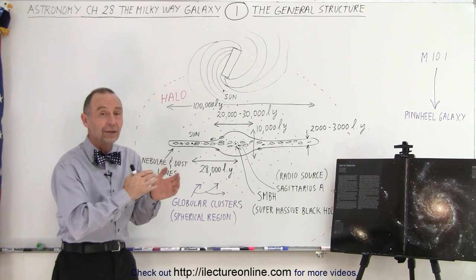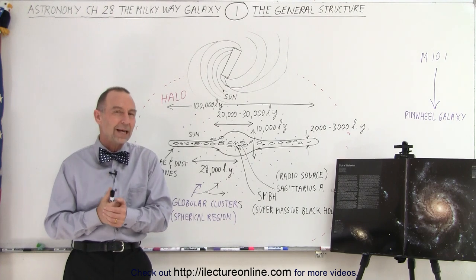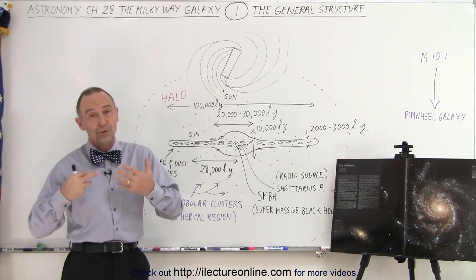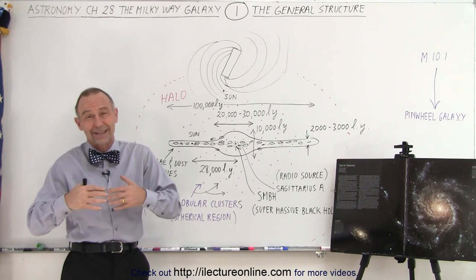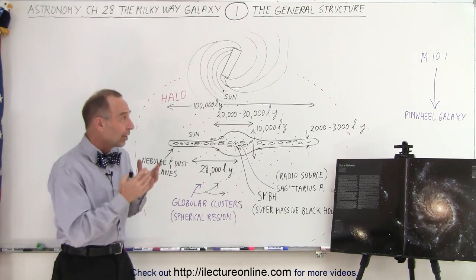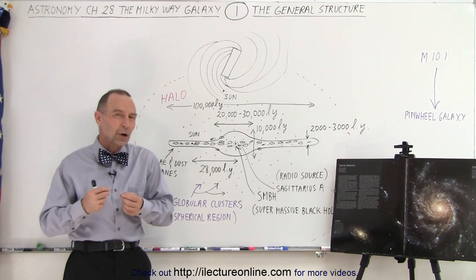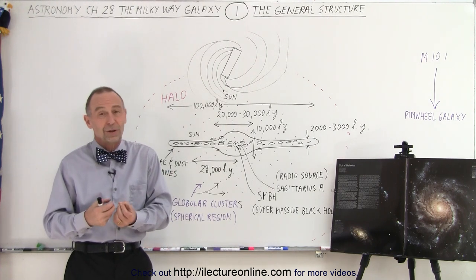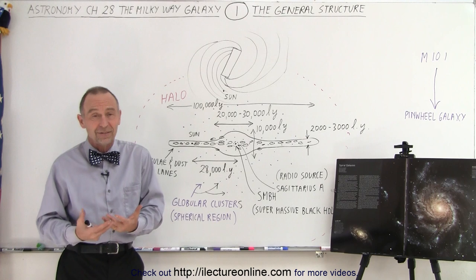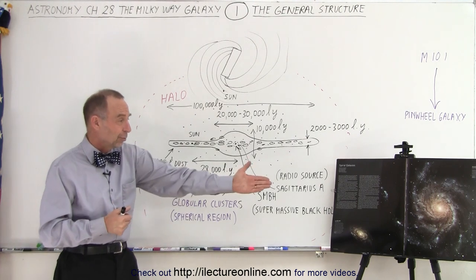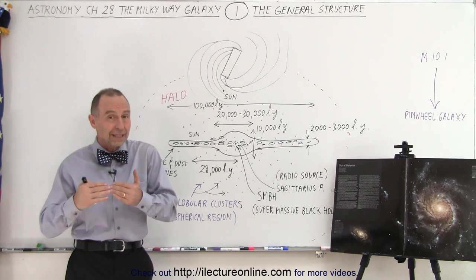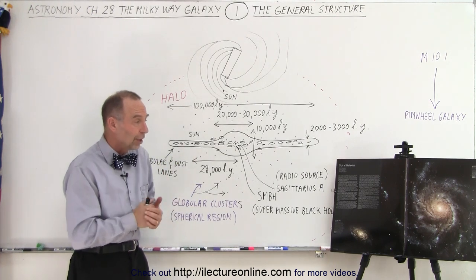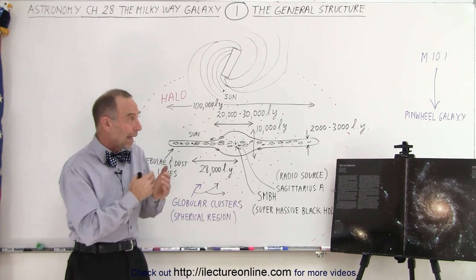But here's the one that we can call our home, the Milky Way Galaxy, and we're going to use that as a study to get a feel of what galaxies are truly like. There's a lot of different types of galaxies, but our galaxy is what we call a spiral galaxy. It's one of the most beautiful types of galaxies, and here's a beautiful picture of a galaxy that probably looks a lot like the Milky Way Galaxy. This is called the Pinwheel Galaxy, M101.